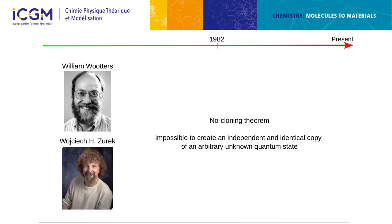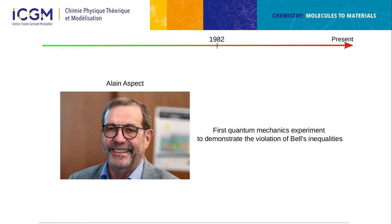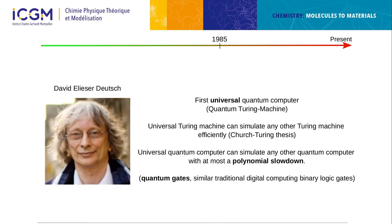There were several mathematical works done on quantum computing, including the no-cloning theorem, which states that it is impossible to create an independent and identical copy of an arbitrary unknown quantum state. David Deutsch also created the first universal quantum computer — the quantum equivalent of a Turing machine — which can simulate any other quantum computer with at most polynomial slowdown. He also introduced the notion of quantum gates.